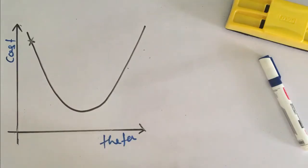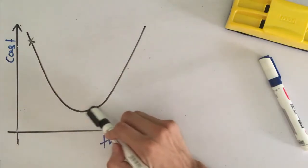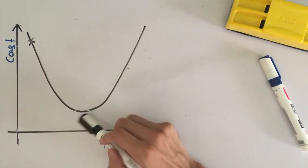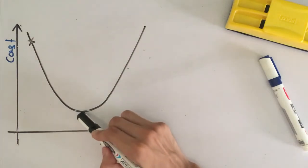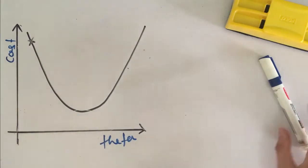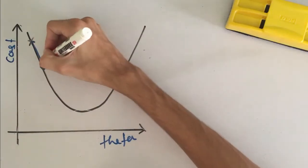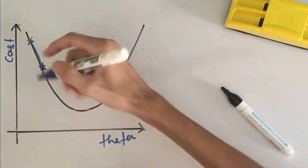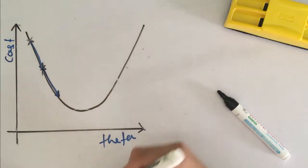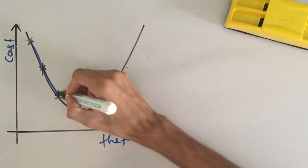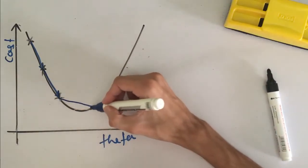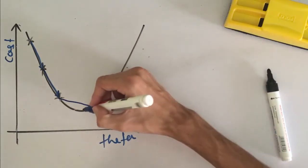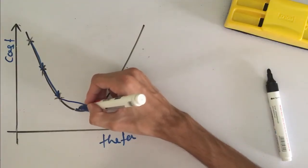Let's say at the beginning we had a cost function value here. Our goal is to minimize this cost function — the minimum lies at the bottom of the parabola. We take one step and reach here, then another step and reach even closer, then another step where we overshoot, so we backtrack and oscillate around that region.